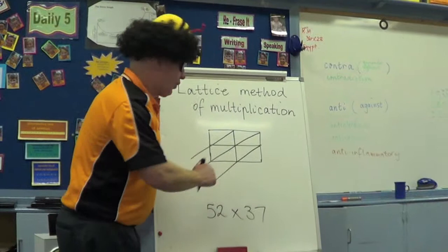52 multiplied by 37. Let's put 52 up here. 37 down the side. Are you with me? Yes!